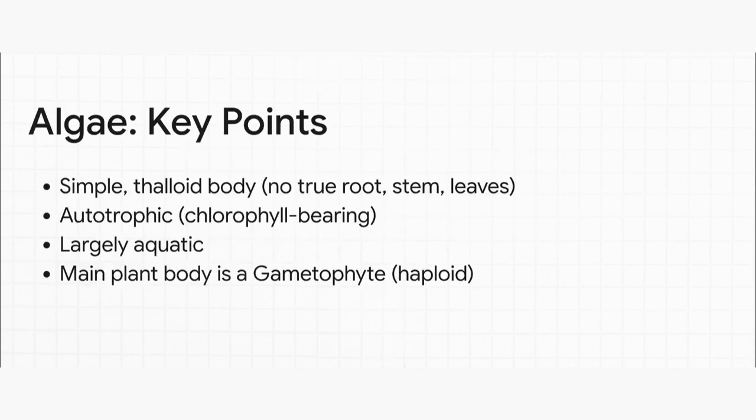Let's check out the key points. First, their body is simple — it's thalloid. What does that mean? Basically, no true root, stem, or leaves. Super simple structure. They've got chlorophyll, of course, so they make their own food. That makes them autotrophic. And as you'd guess, they're mostly aquatic. Now listen up — this is the NEET alert. The main plant body is the gametophyte, and that means it's haploid, or N. You have to remember this.